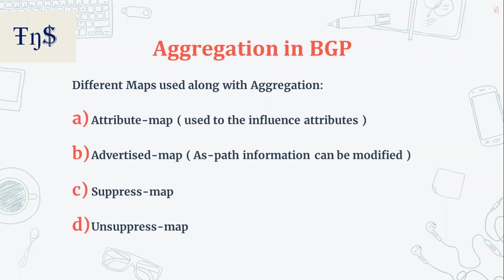Now let's look at the different kinds of route-maps that we can use with aggregation. The first one is the attribute map.